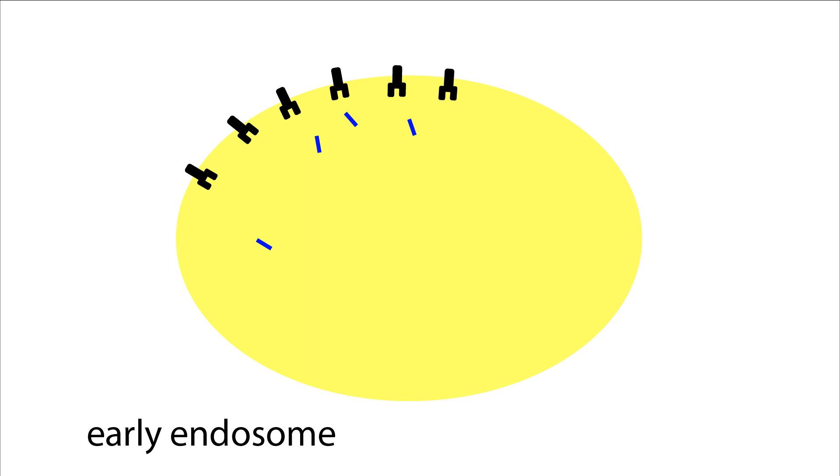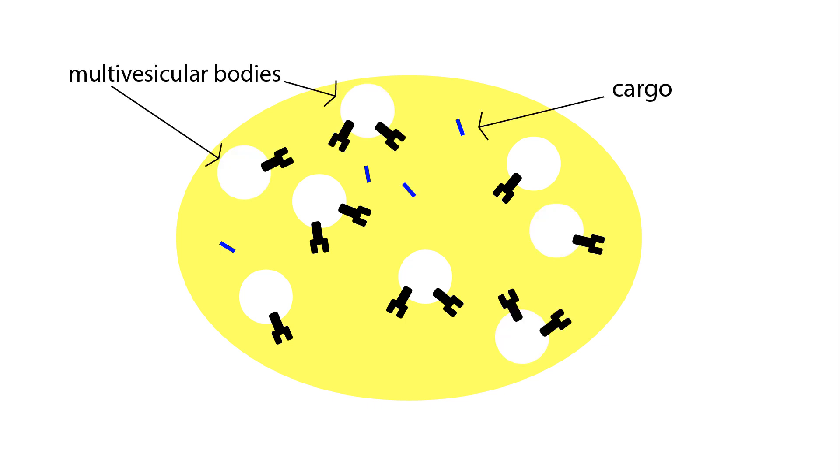To overcome this problem, regions of the endosome membrane containing membrane proteins curve in toward the lumen and bud off forming luminal vesicles. Endosomes with these luminal vesicles are called multivesicular bodies. Now all the endosome cargo is contained within the lumen and is accessible to proteolytic enzymes.